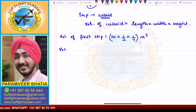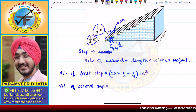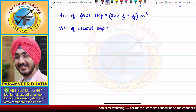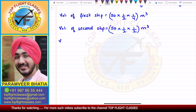For the volume of the second step: the width is still 1/2 and the length is still 50 meters, but the height is now 1/4 + 1/4, which equals 1/2. So the volume of the second step = 50 × 1/2 × 1/2, giving that value in meter cube.